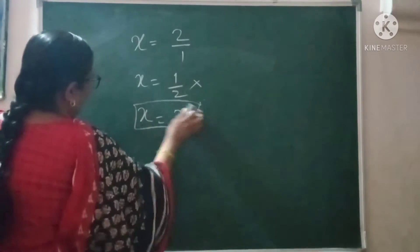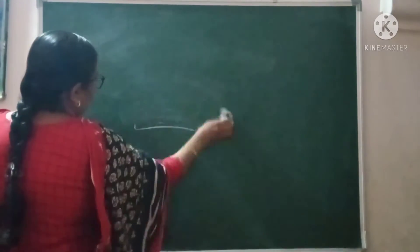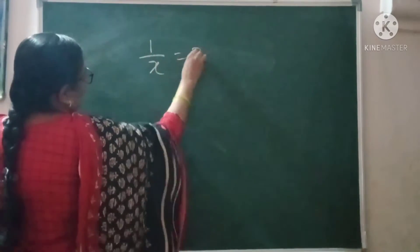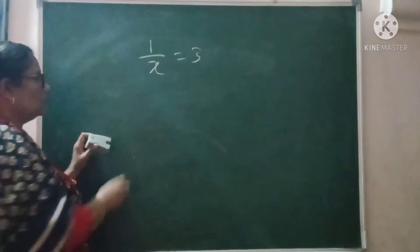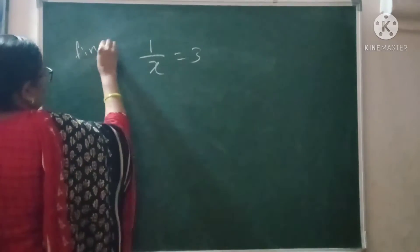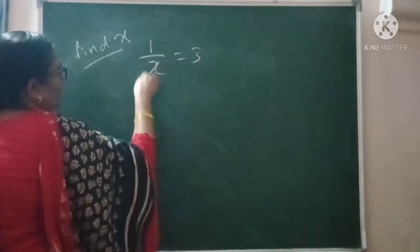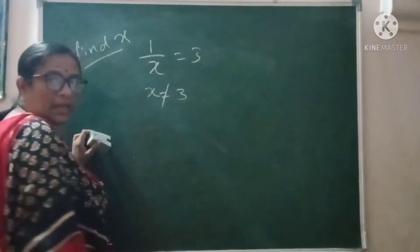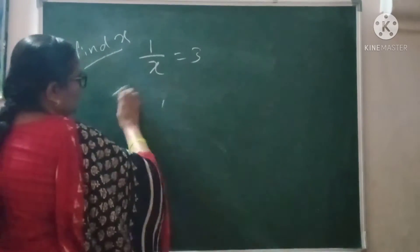And in the same way, if you are solving the equation and if you have got 1 upon x is equal to 3, if it is asked find x, what to do? Find x in this case. 1 upon x is equal to 3. Don't write x is equal to 3 which is wrong. x is not equal to 3. So how to solve this one?